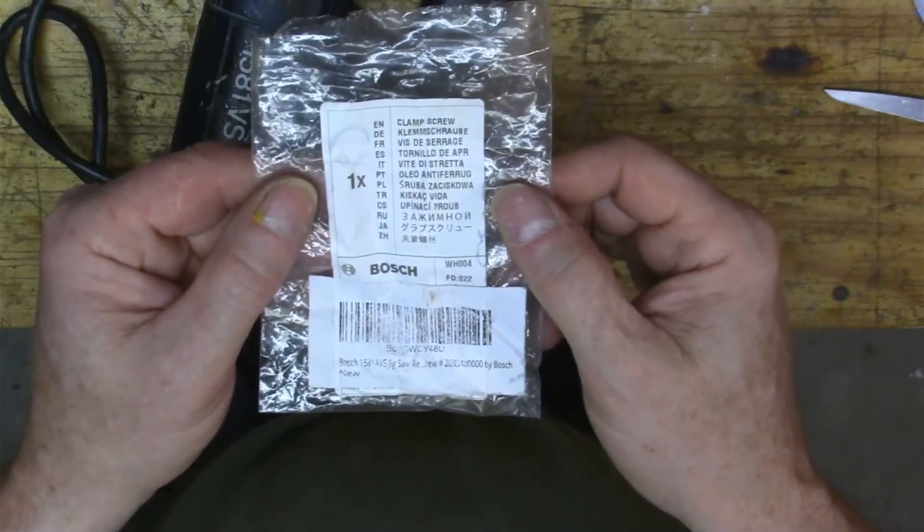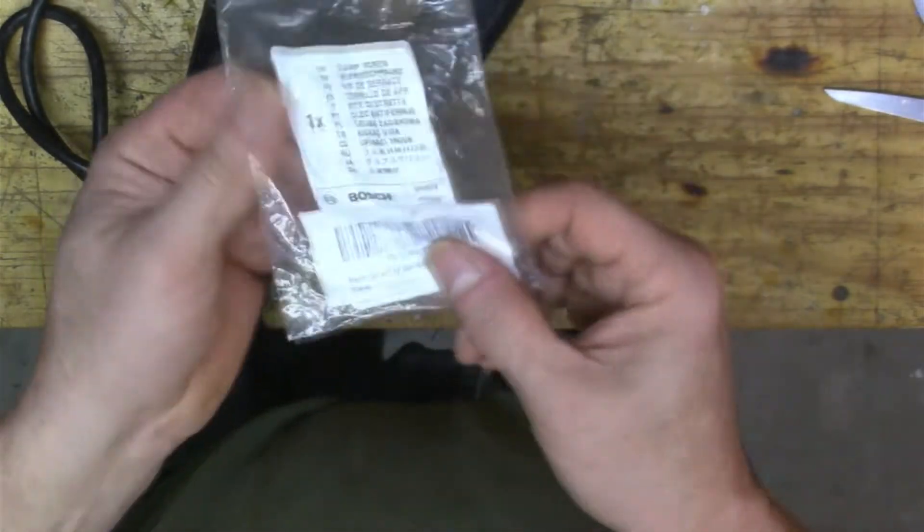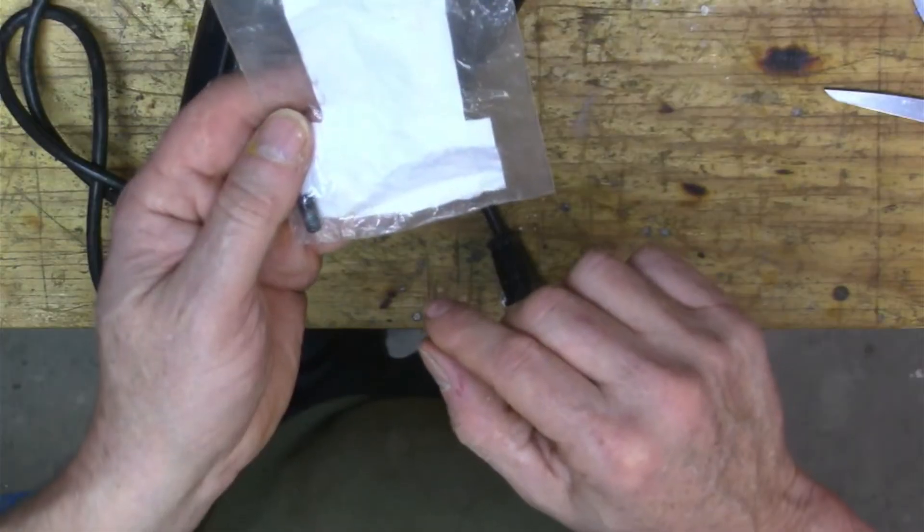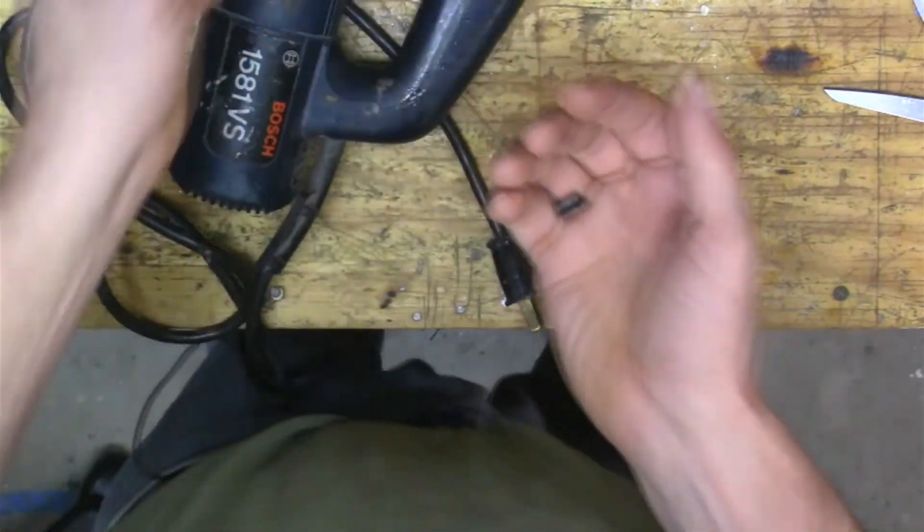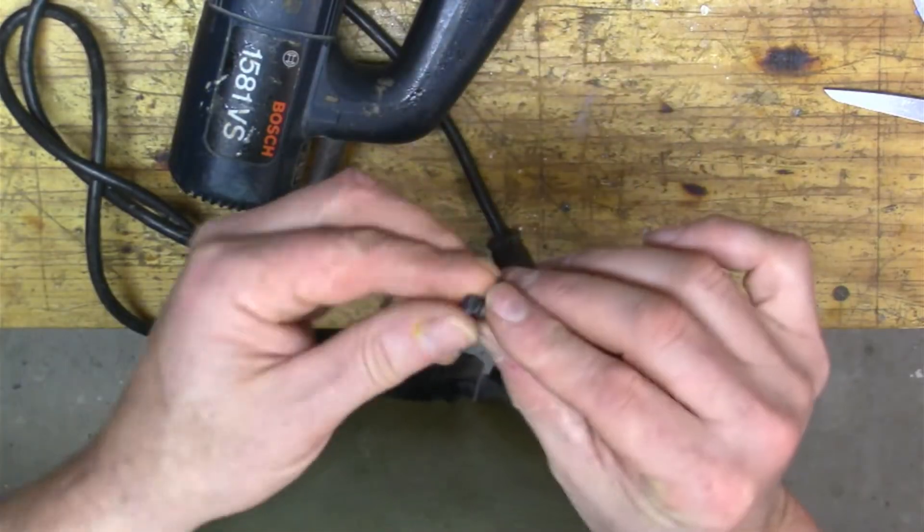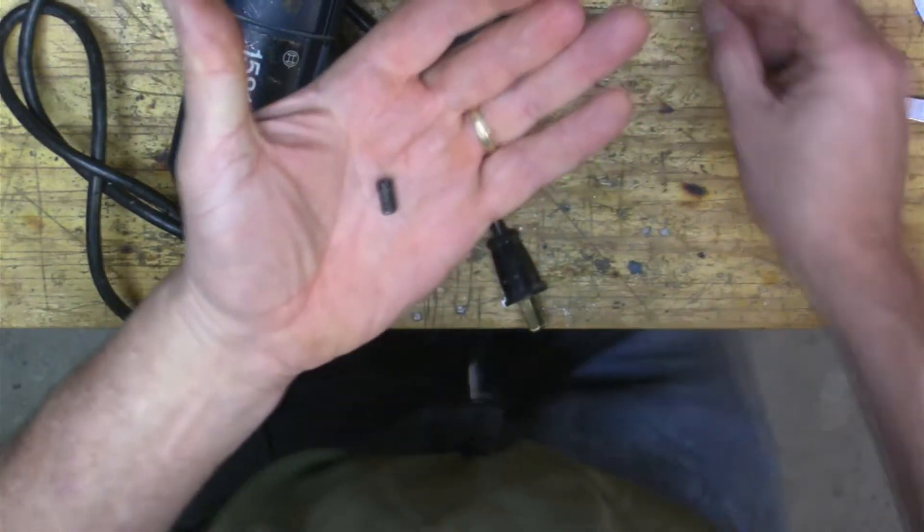So there's a genuine Bosch part WH004 I guess, and I bought it off Amazon. It was a little expensive at $8.99, but you could find it other places cheaper. But then by the time you paid the shipping kind of ate that up.